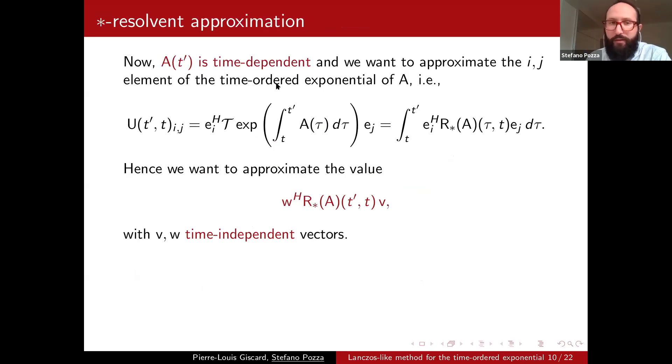So let's try to do that. We are back to our initial problem. We have a time-dependent matrix A. We can formulate the time-ordered exponential U by the star resolvent, and we are interested in computing the ij element of this U. So now this problem can be generally written in this way, where you have a vector time-independent vector W and V that are multiplied. And here the multiplication is the common matrix-vector multiplication, and you're going to approximate this object.